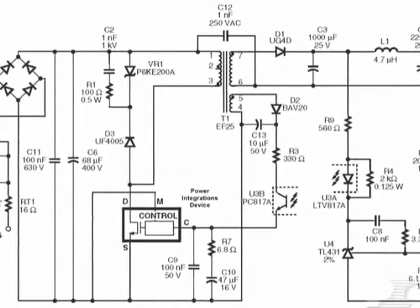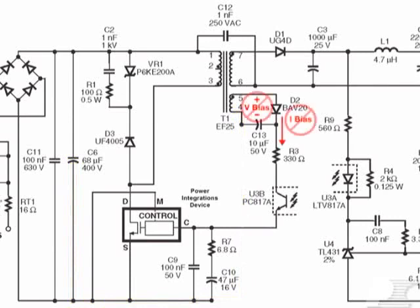If using a top switch device, verify that the return, the zero volt end, of the transformer bias winding is connected to the primary side return. This is the negative terminal of the input capacitor. If the transformer bias winding is left floating, the optocoupler has no supply voltage and therefore no feedback signal can be provided to the power integrations device, causing the device to enter auto restart mode.